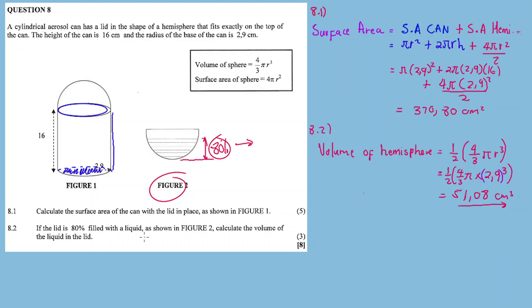This equals 51.08 cm³. But remember, I need to know what is 80% of the volume. The liquid fills only 80% of the volume, so we need to calculate 80% of the total volume.